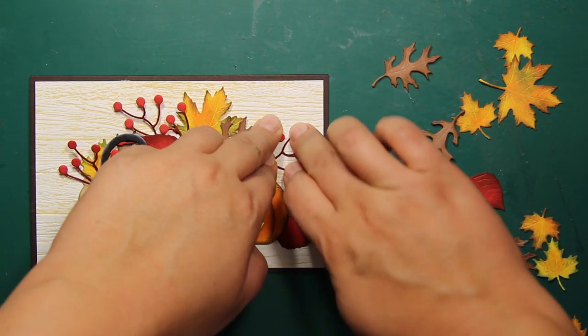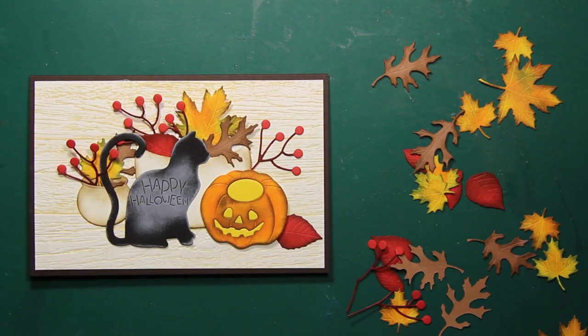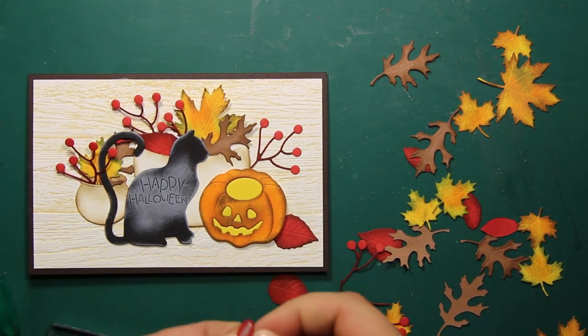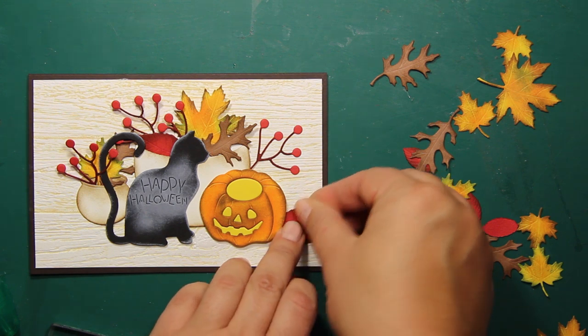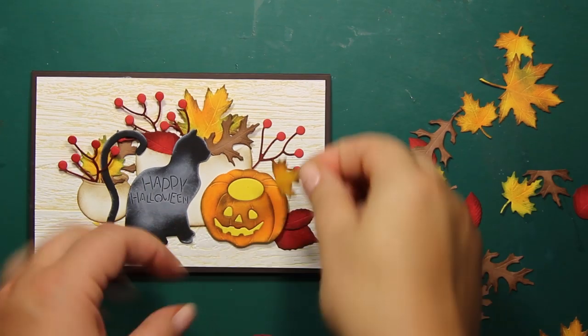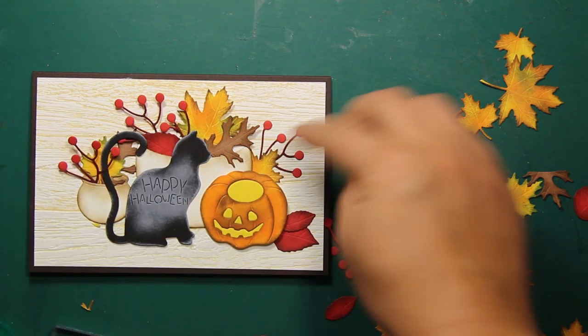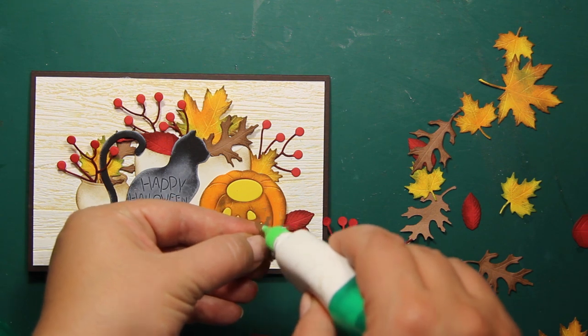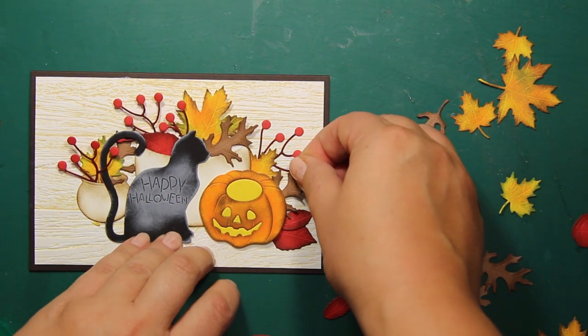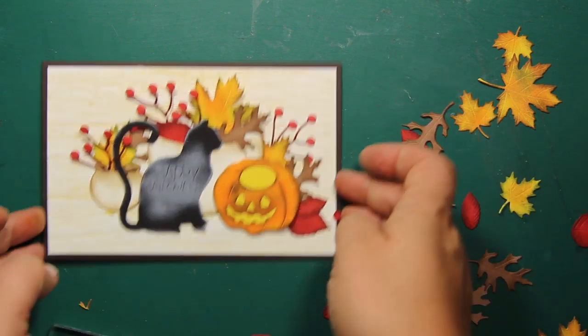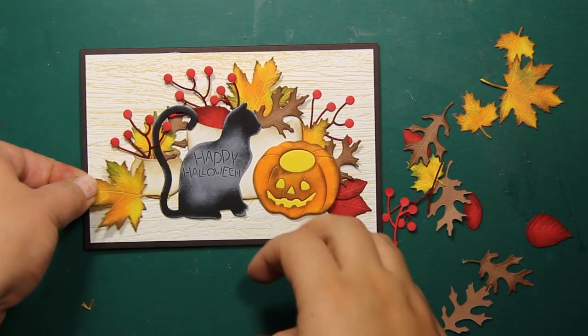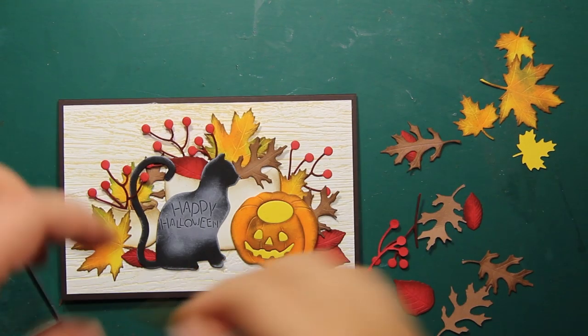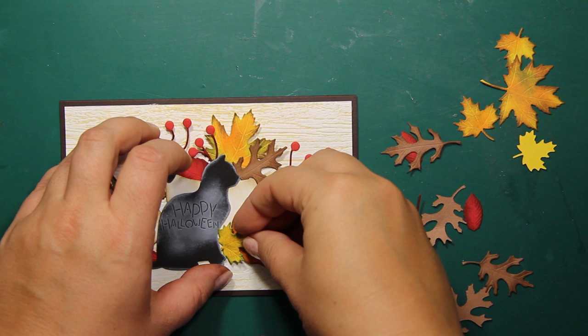All there is left to do is to fill in the spaces and balance everything out. So basically, whenever I feel that something is missing in some particular spot, I'm just taking a leaf or berry die cut and sticking it on that spot. I'm also trying to alternate the colors and not place too many elements that are the same color onto one spot. Even though I was quite generous with all those fall leaves, I had a lot of them left.